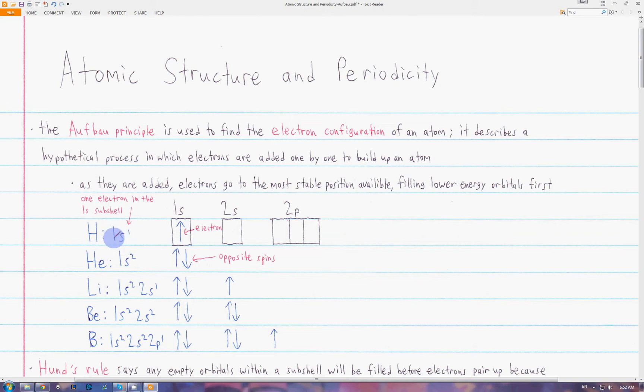In addition to the electron configuration, we can draw an orbital diagram, which represents orbitals with boxes. We represent an electron with an arrow, and the arrows can either point up or down, depending on which way they spin.